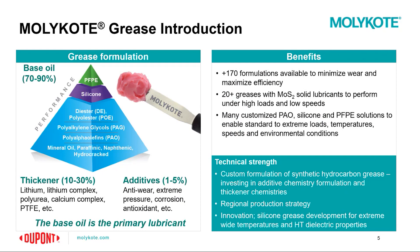Diving a little deeper into greases and their formulation, there are really three components. We have the base oil, which makes up about 70% to 90% of the total composition. Then you have the thickener, which is somewhere between 10% and 30%. And then your additives, which are 1% to 5% of the formulation. Looking at this performance pyramid for base fluids, you can start at more typical mineral oils and polyalpha olefins, and as you move up to the top you have PAGs, silicones, and PFPEs — you gain performance as you go up that pyramid.